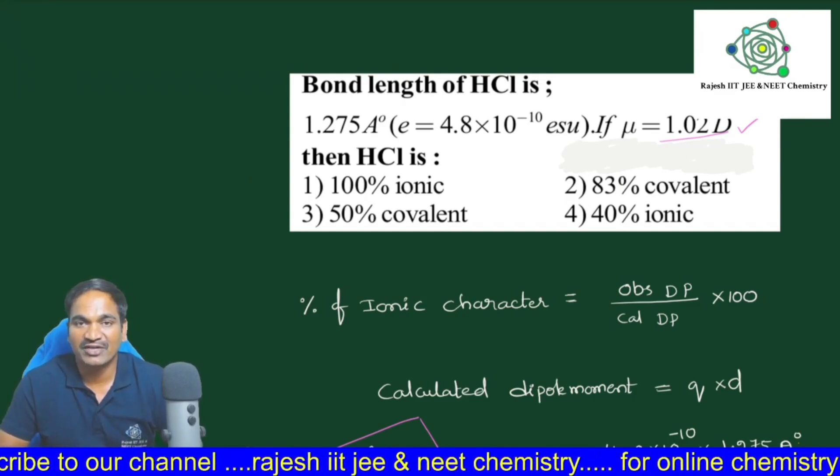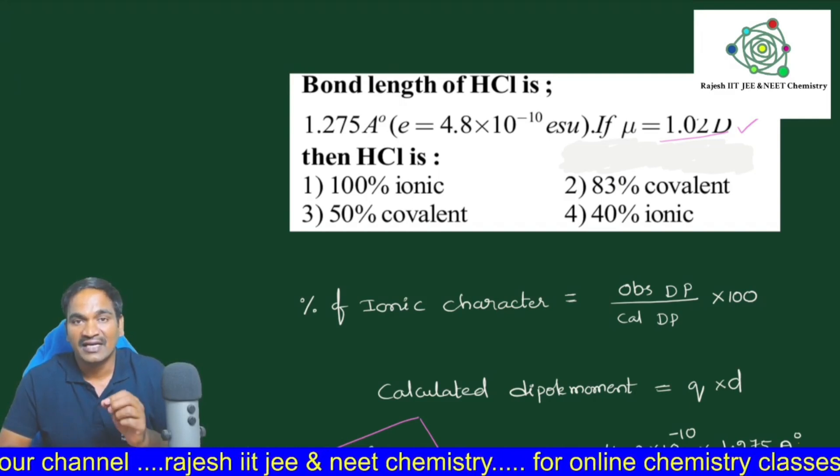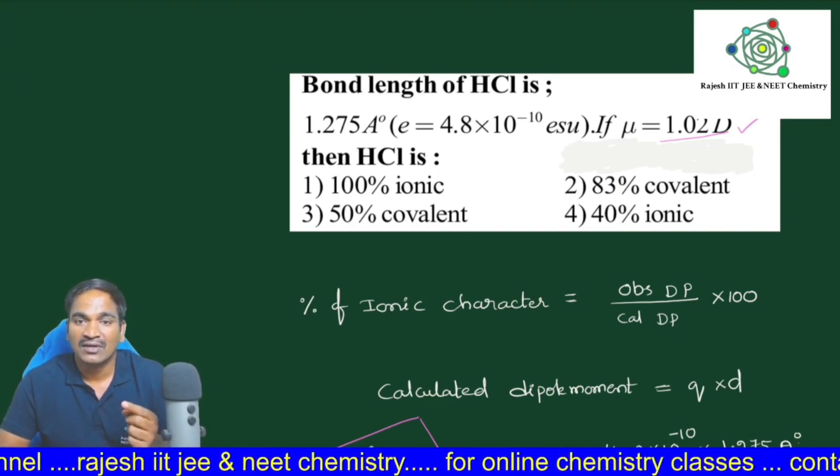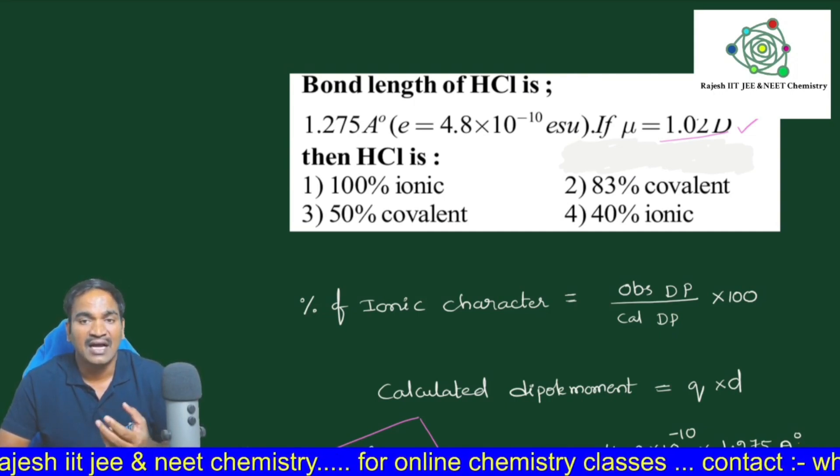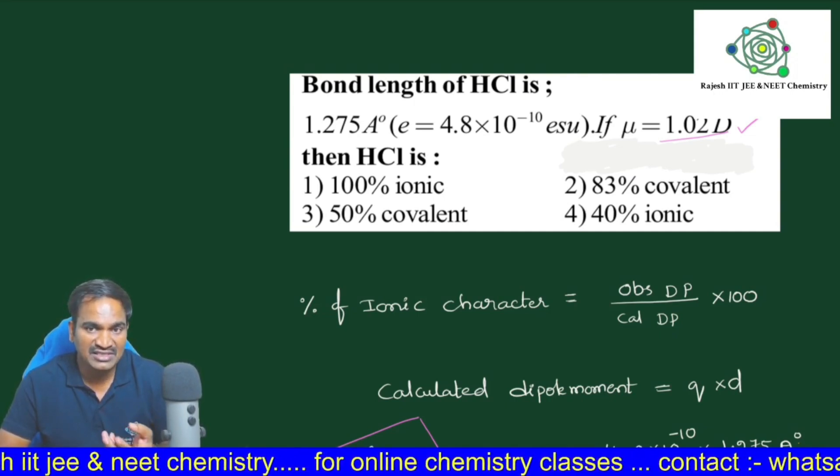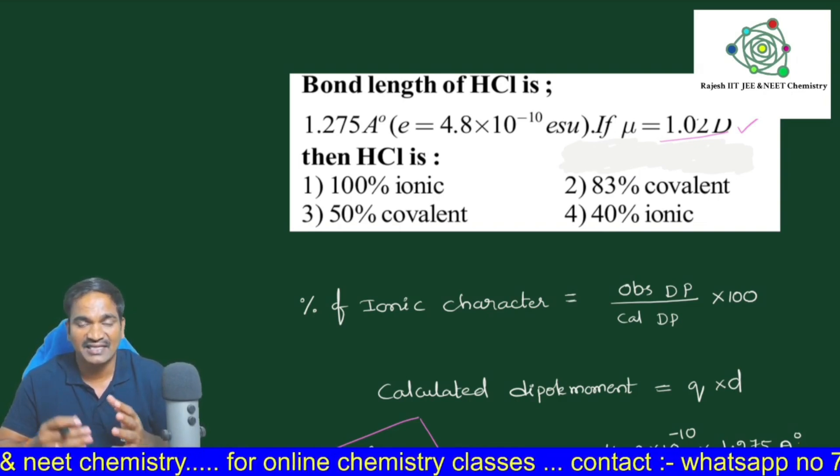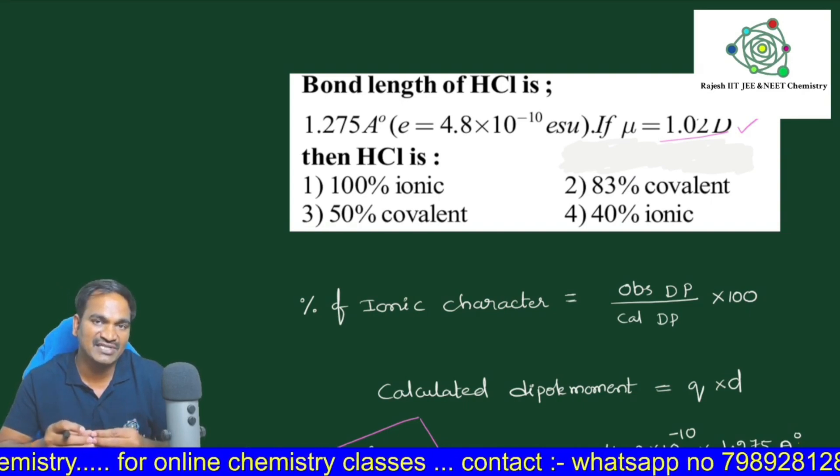Hello students, today we are going to solve one important model in chemical bonding based on the dipole moment concept. Here they gave bond length between H and Cl in HCl, charge of the electron is given, and dipole moment is given. They are asking about what is the covalent character, how much covalent character is present between H and Cl in HCl.